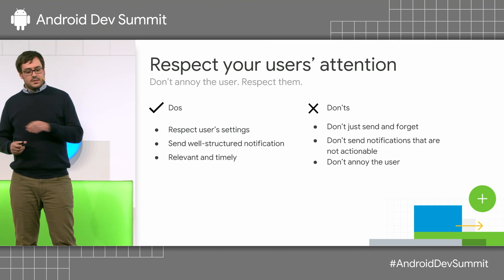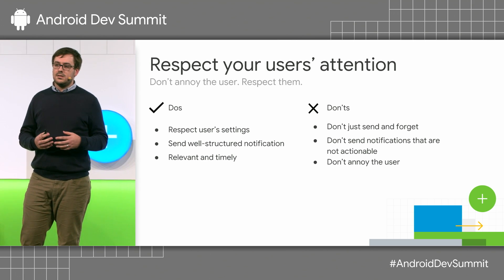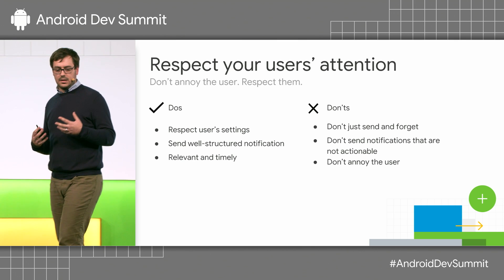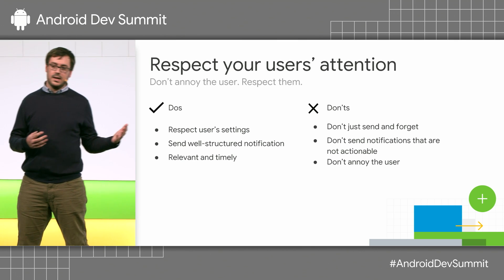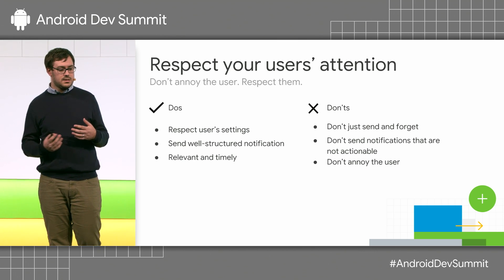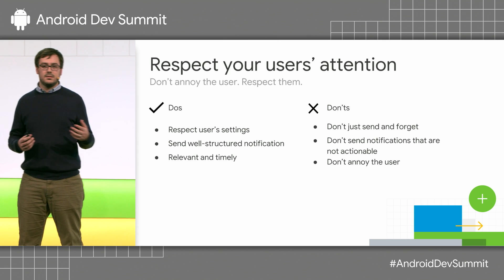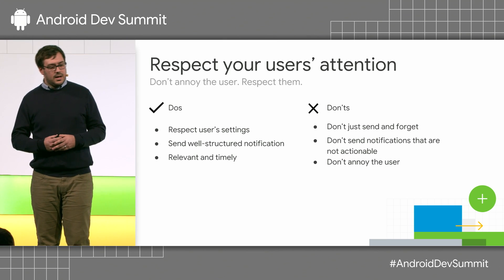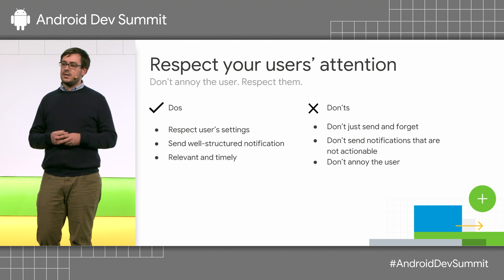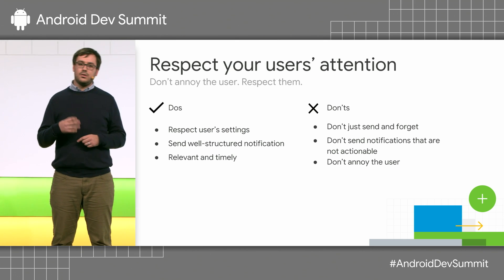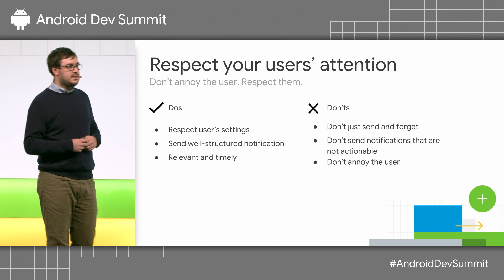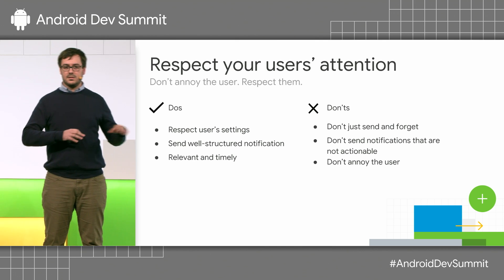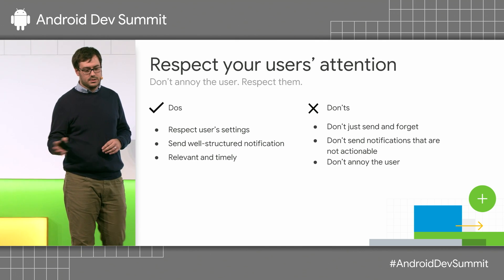Some basic don'ts: don't just send these notifications and forget about them. Use the platform features that are there to help you — for instance, auto-cancel, making sure that your notifications disappear when they should. Timeouts: is a notification really relevant after four hours? And synchronizing across devices: if you know that your user uses your app on multiple devices, like tablets and desktops, you should try and synchronize notifications that they dismiss or read on one across others.